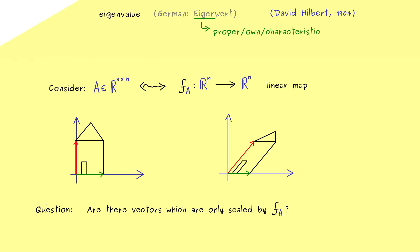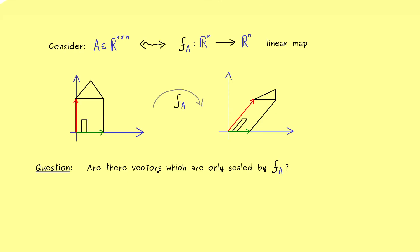More precisely, we ask, are there any vectors that are only scaled by our linear map f_A? This means, by going from left to right, the direction of this vector does not change. And I can already tell you, these special vectors we will call eigenvectors.